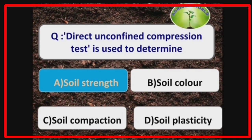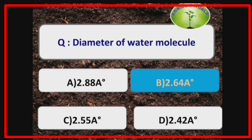Direct unconfined compression test is used to determine soil strength. The diameter of a water molecule is 2.64 Angstroms.